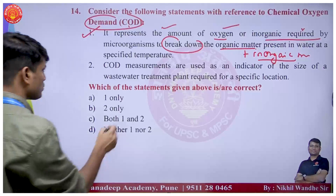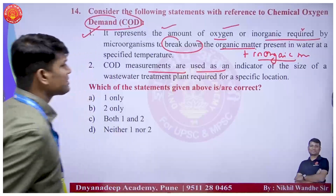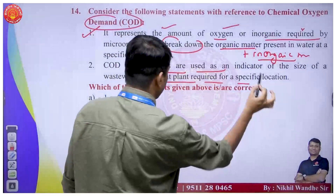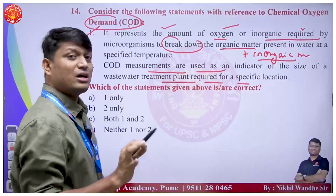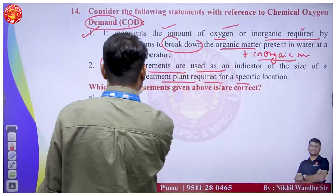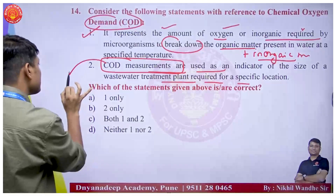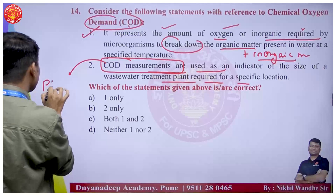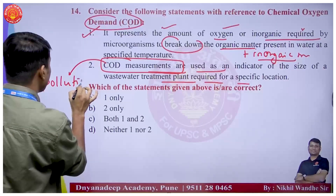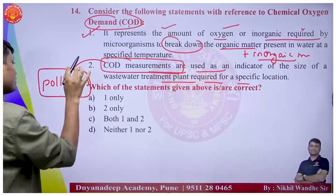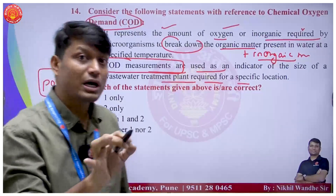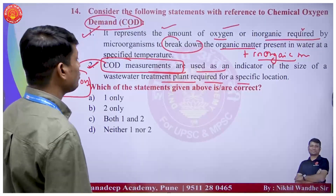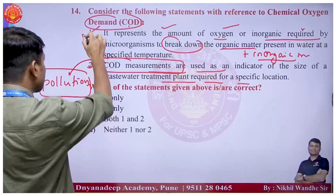Regarding COD measurements: they are used as an indicator of the level of pollution in a water source - not as an indicator of the size of wastewater treatment plant required. The second statement is incorrect. Only the first statement is correct in this case.